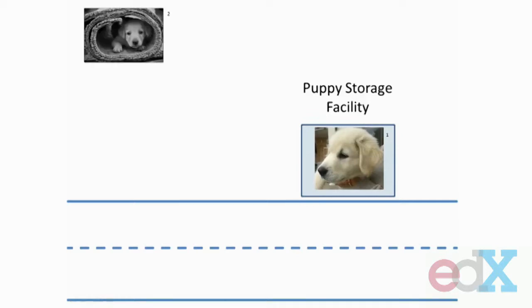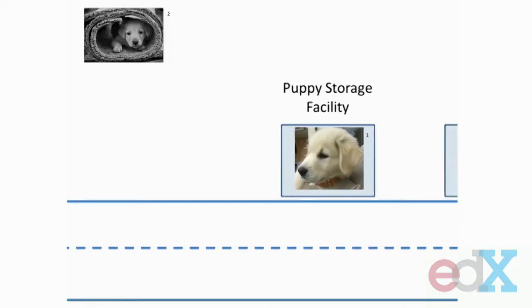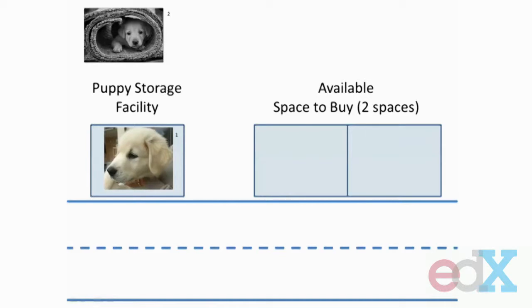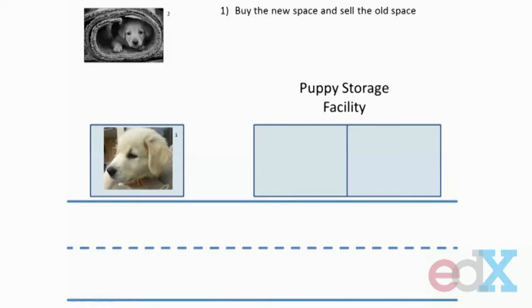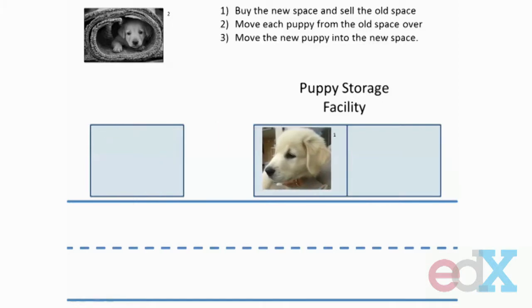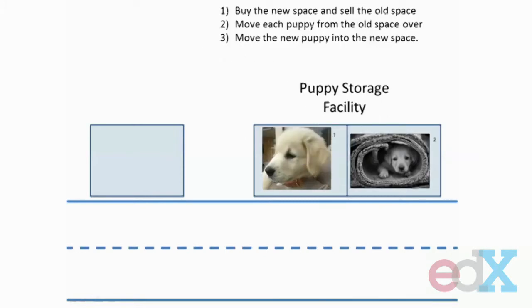He just received a new puppy. Because he likes keeping all his puppies in one location, if he wants to store more puppies, he must sell his current facility and buy a new space that's bigger, just down the street from his current location. To move into the new space, he has to buy the new space and sell the old one — that takes one unit of time. Then he has to move each of the puppies from his old space over to the new space, and finally move the new puppy into the new space as well. Each puppy movement takes one unit of his time.